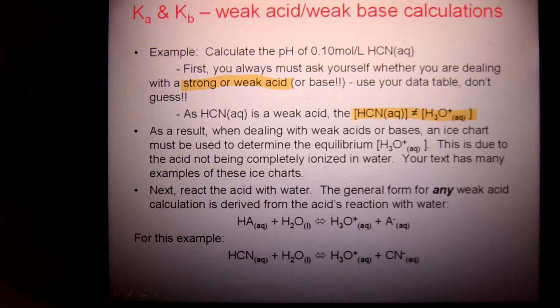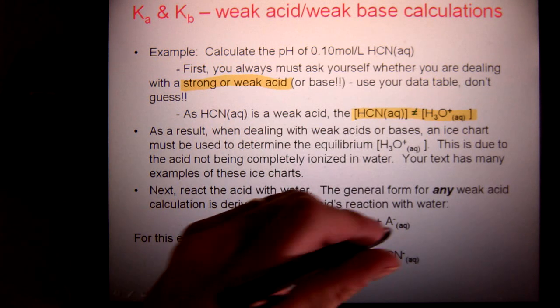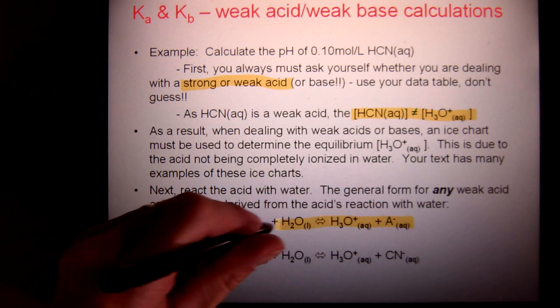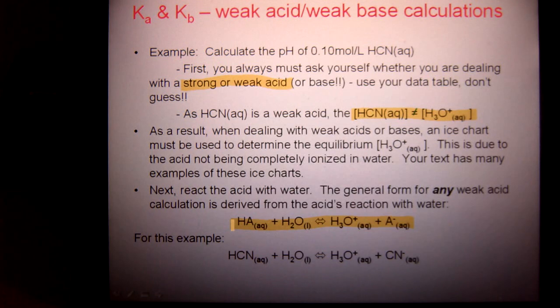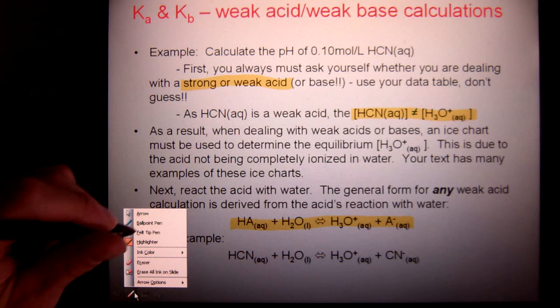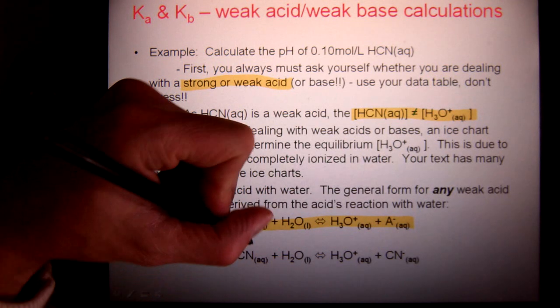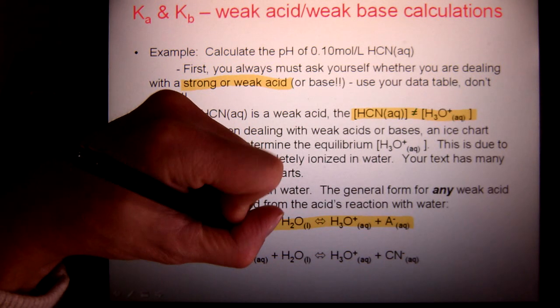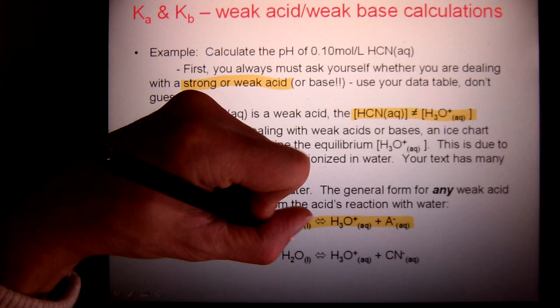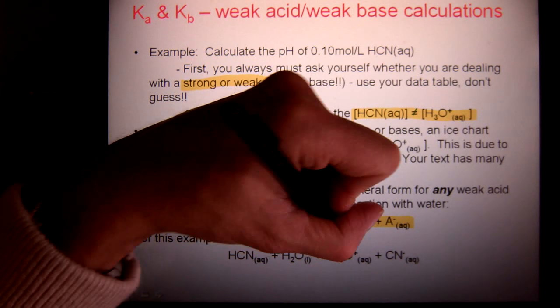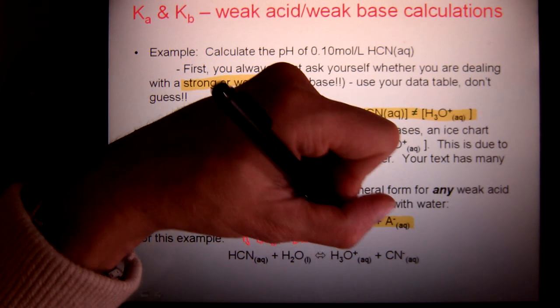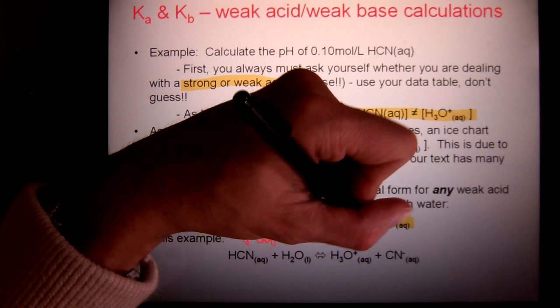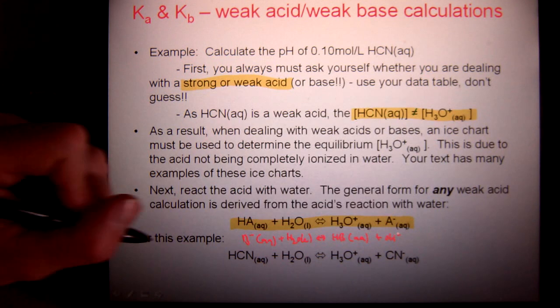If I'm going to figure it out, I can figure it out by using an ice chart. Well, when using an ice chart, I want to use a reaction. This would be the generic reaction you could use for any weak acid scenario. For a weak base, it would look very similar. You could have something like this, where it would be a negative charge plus water produces a conjugate base and hydroxide. You could use that for a weak base.